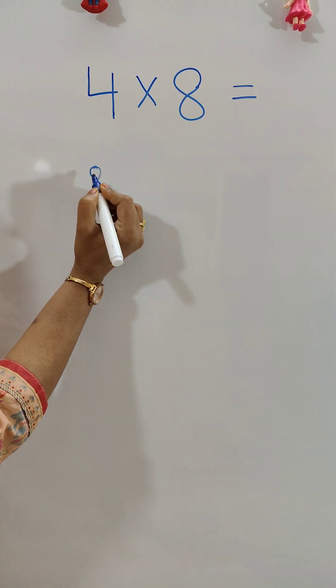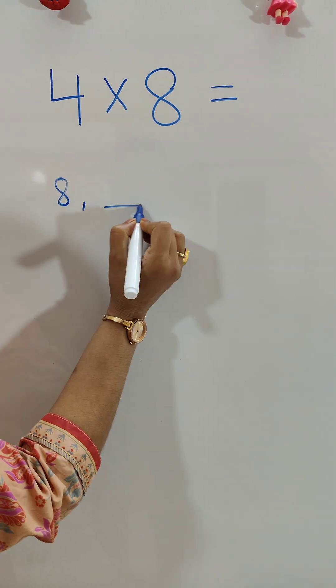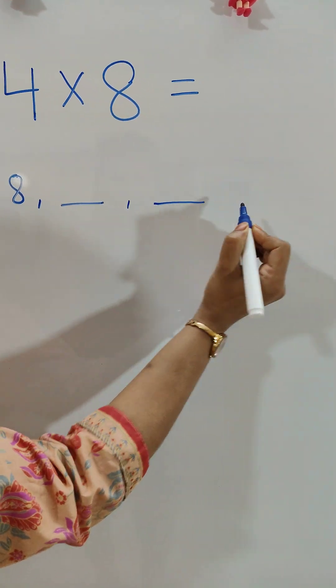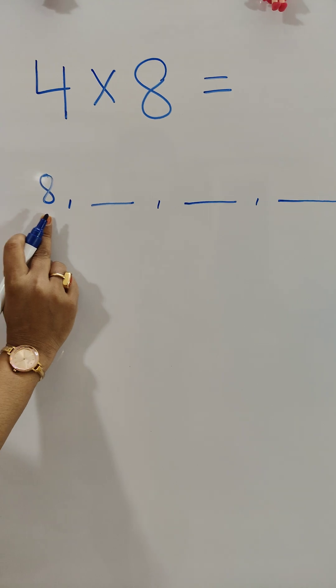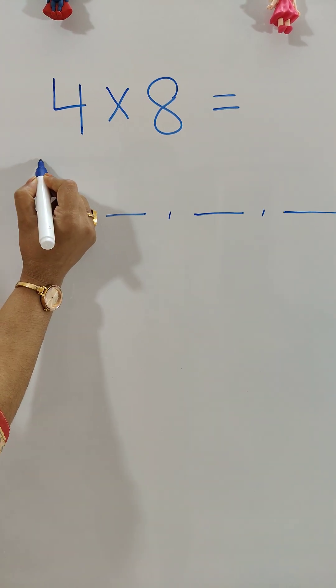What we're going to do is write the first number, 8, and then since we have 4, we will give 3 blanks. 8 is here. What will be the next number? We are multiplying with 8, so we will give 8 dots.